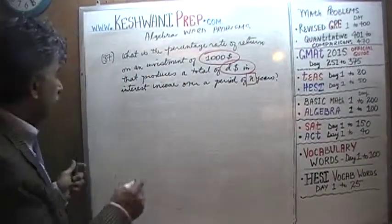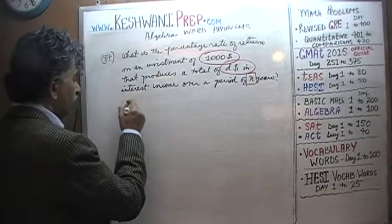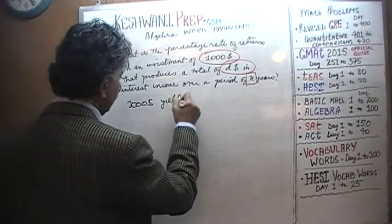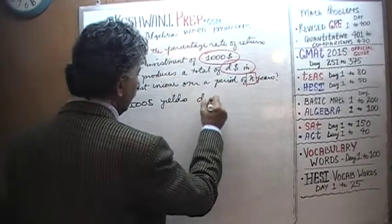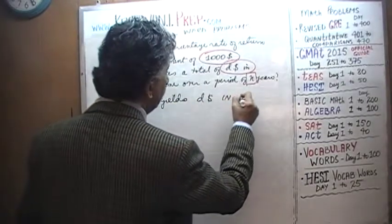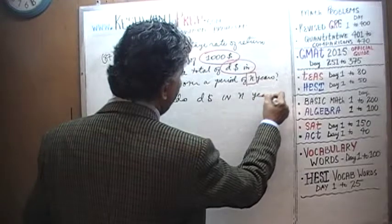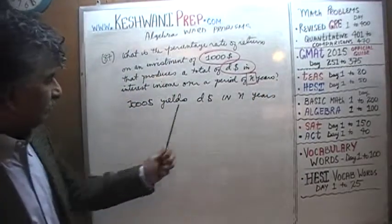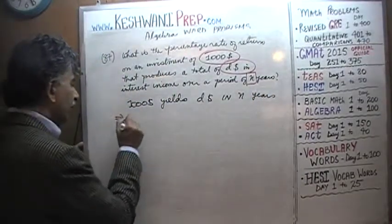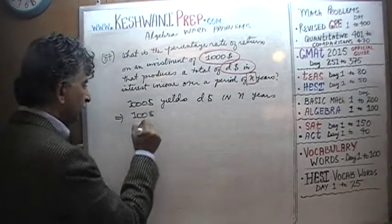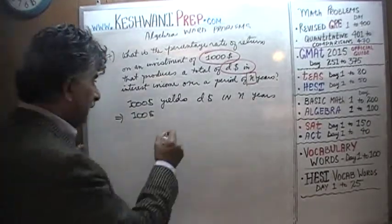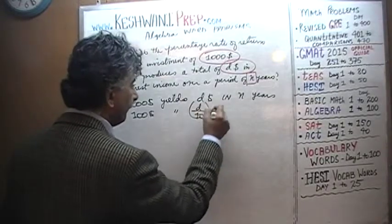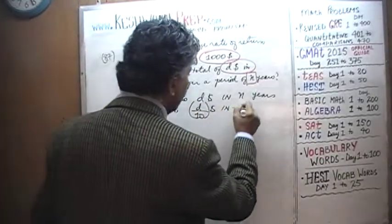Let's begin with what we know. We know that $1,000 yields D dollars in N years. If $1,000 yields D dollars, then that in turn implies that if you were to invest a tenth of the amount, $100 should yield a tenth of the income in N years.